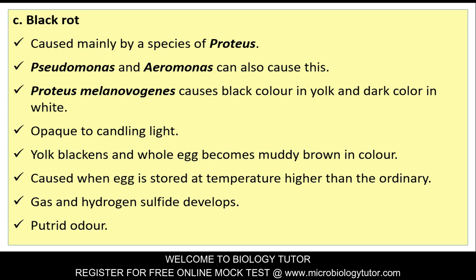Black rot: Caused mainly by species of Proteus. Pseudomonas and Aeromonas can also cause this. Proteus melanogenes causes black color in yolk and dark color in white. Egg is opaque to candling light, yolk blackens, and the whole egg becomes muddy brown in color. Caused when egg is stored at temperatures higher than ordinary.